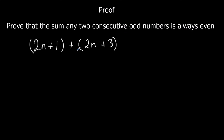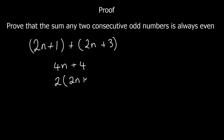Then we just have to add them up. So 2n plus 2n is 4n, and 1 plus 3 is 4, giving 4n plus 4, which is the same as 2 times (2n plus 2). So because we've multiplied by 2, it's even.